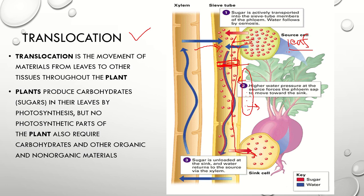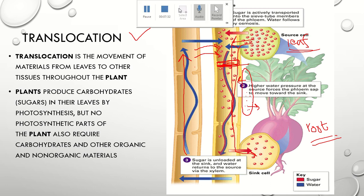To summarize: source cells are leaf cells that prepare sugar molecules, and these are transported from source toward the sink. The sink could be roots or flowers where extra sugar molecules are stored. In this diagram, you can also see that xylem assists the movement of water molecules during this transportation process.